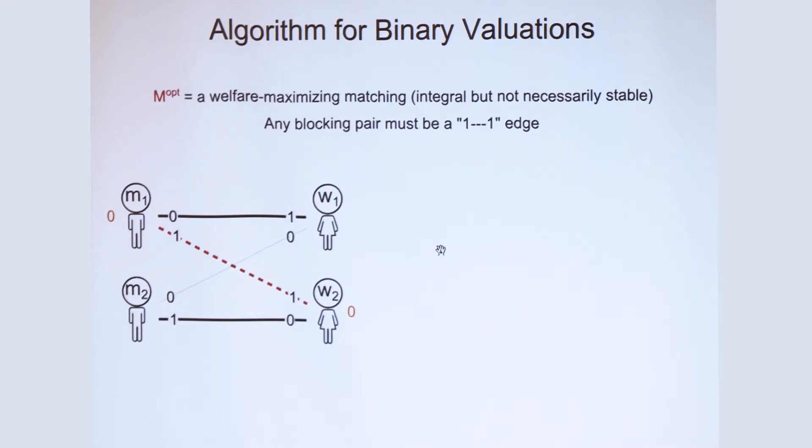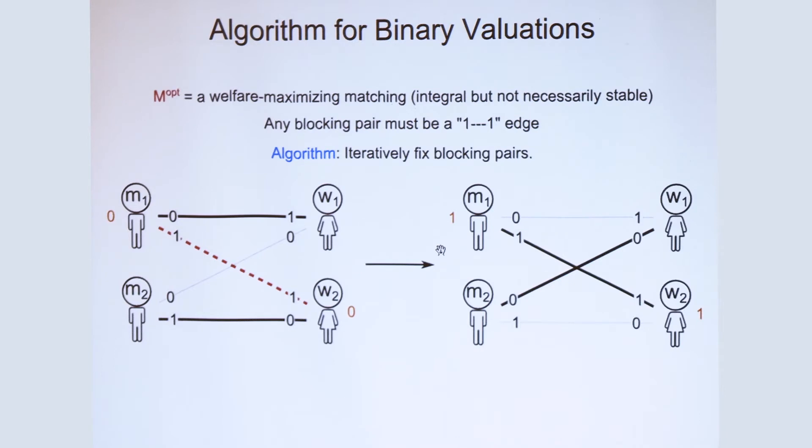And now the algorithm is very simple. So whenever we see a blocking pair, we just do a toggle. We just swap the edges and we fix the blocking pair. So a couple of observations. First, that this toggle operation does not change the welfare, because earlier the welfare was one plus one, two. And now it's like two plus zero, two. So there's no change in the welfare. And the utilities of other agents are, of course, unchanged.